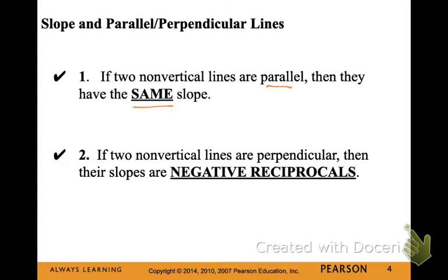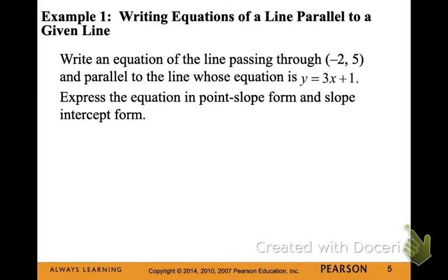If two non-vertical lines are parallel, they have the same slope. They are slanting in the exact same way. If two non-vertical lines are perpendicular, then their slopes are opposite reciprocals. So that means if the original slope was positive, then the perpendicular slope will be negative. If the original slope was negative, the perpendicular slope will be positive.